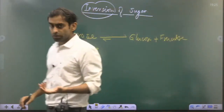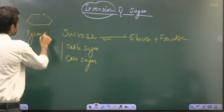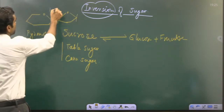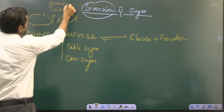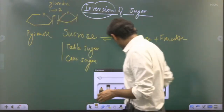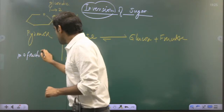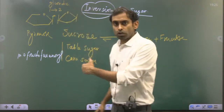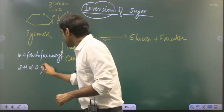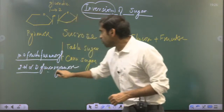Looking at the structure of sucrose: there is a glucose molecule in pyranose form connected to a fructose molecule by a 1,2 glycosidic linkage. Biochemically, sucrose is beta-D-fructofuranosyl 2,1-alpha-D-glucopyranoside. That is the full chemical name for the sugar you use in your kitchen.